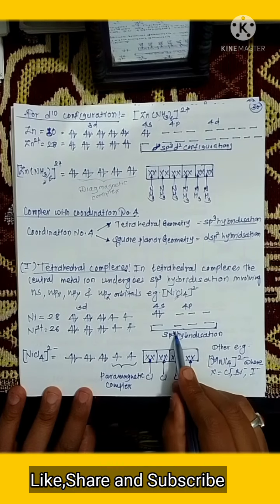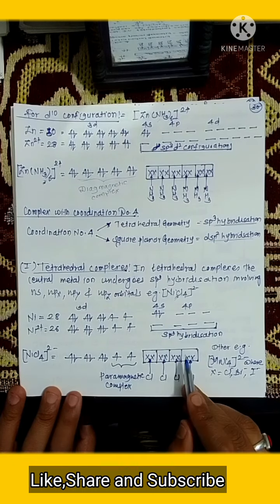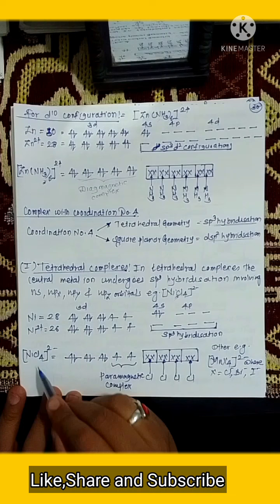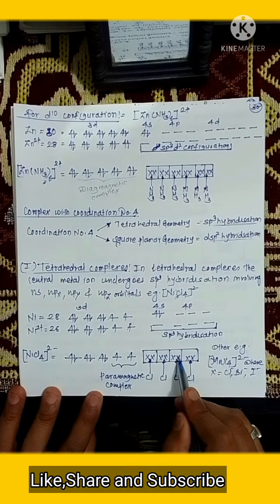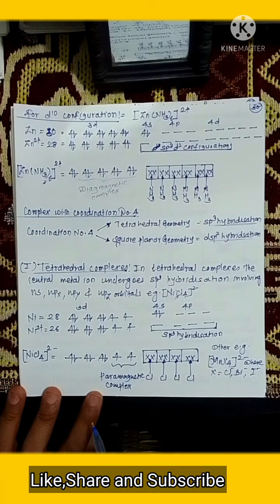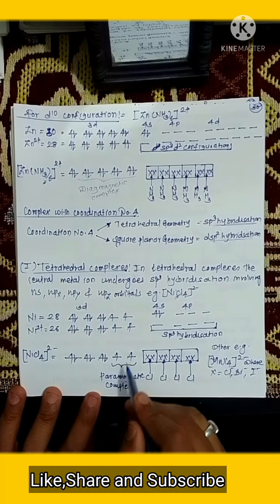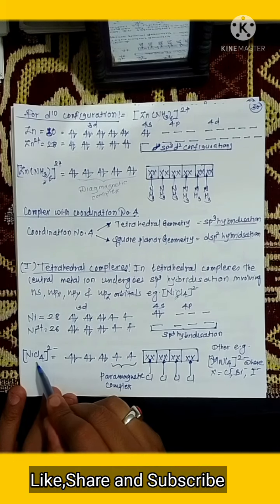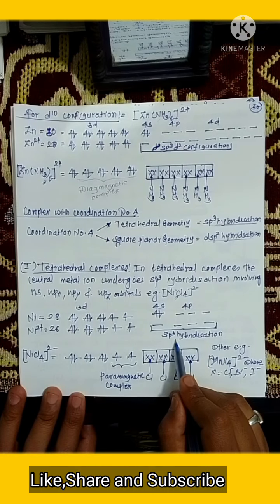We have 4 sp3 hybrid orbitals and 4 ligands, so each ligand donates its electron pair into a hybrid orbital, forming a total of 4 coordinate bonds. In this electronic configuration, there are two unpaired electrons, and that is why this complex is paramagnetic in nature.